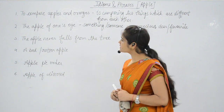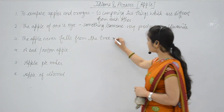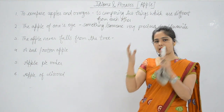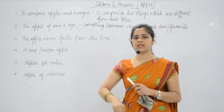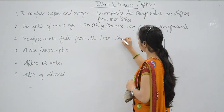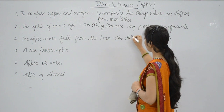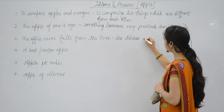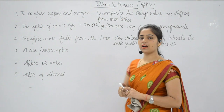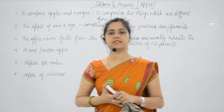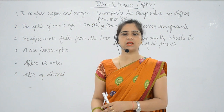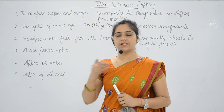Next is 'the apple never falls far from the tree.' Think of an apple falling under the apple tree. It basically means that children are usually similar to their parents — just as the parents are, so are their children. The qualities of the parents are inherited by their children.